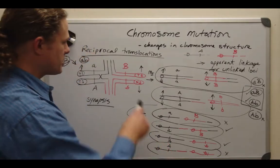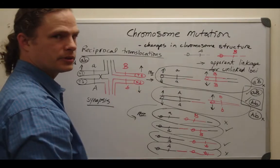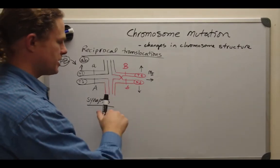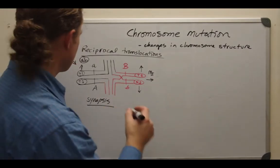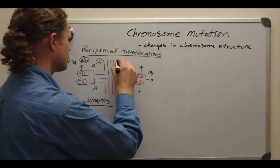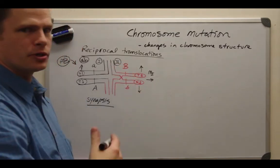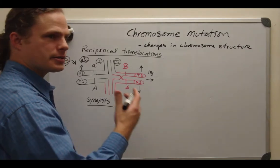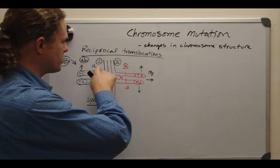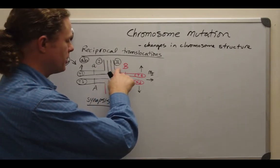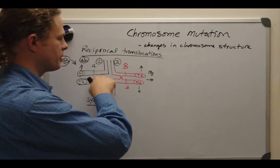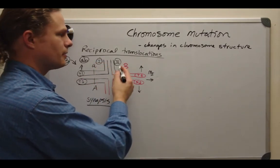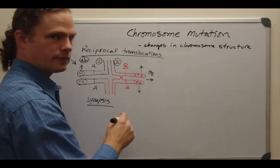In the next segment we'll discuss what happens when we have a crossover in this region. Recall from three-point test crossing, where we discussed region one and region two with single crossovers. That exact same strategy applies here — we can treat these as region one and region two. What we just did was NCO1 and SCO2 in the last segment. Now we're dealing with NCO1 and SCO2, and then we'll go on to the double crossover situation.